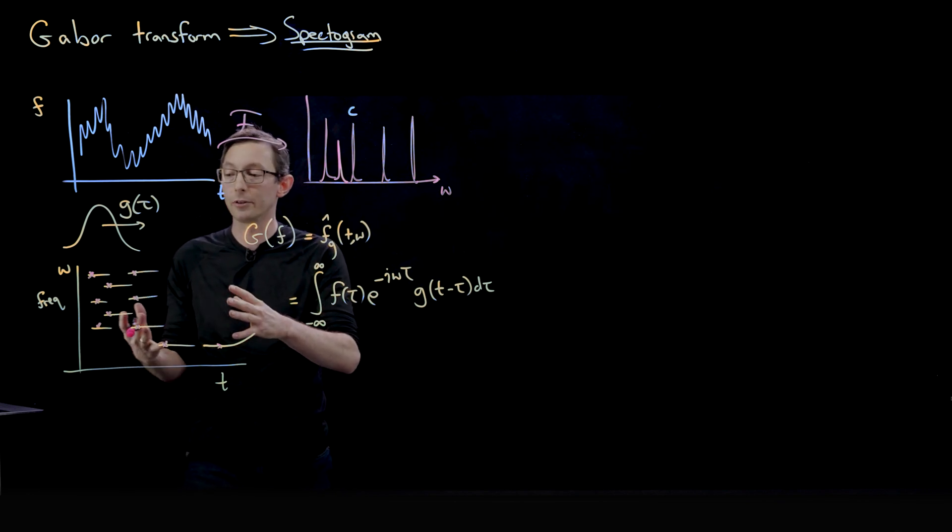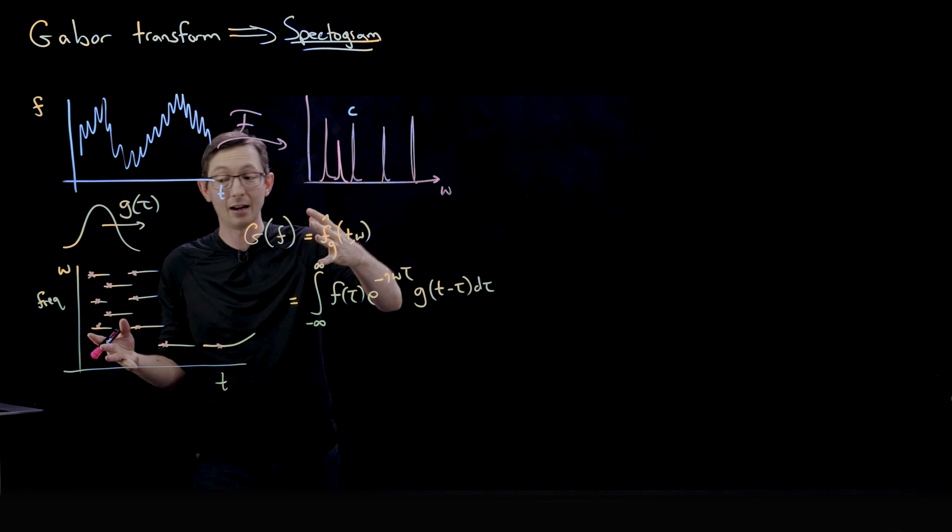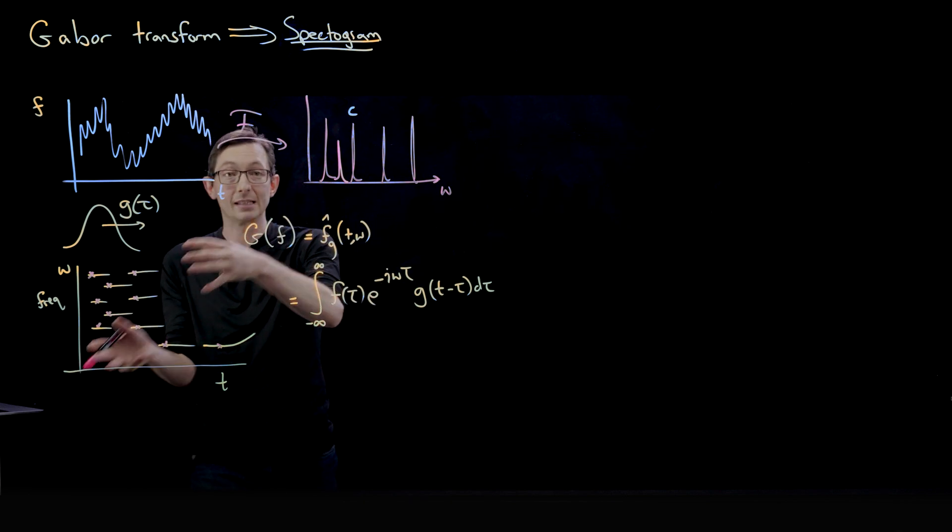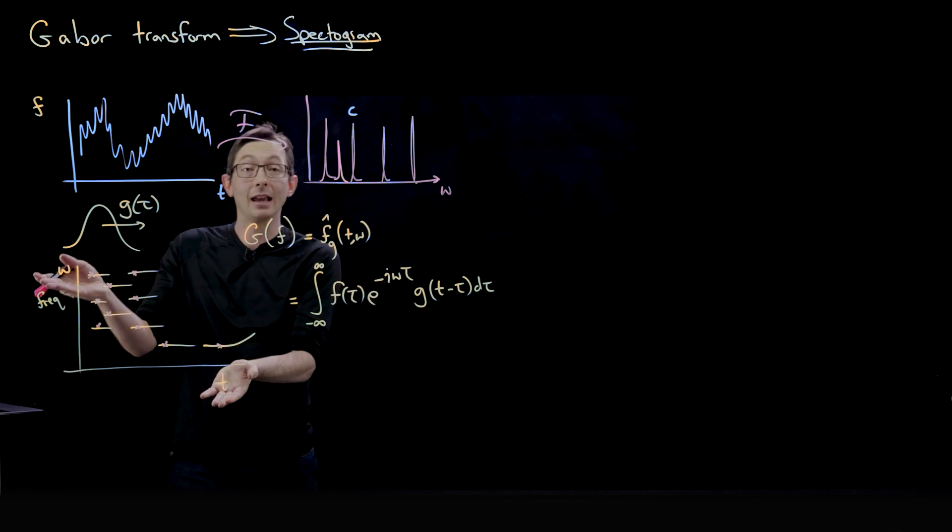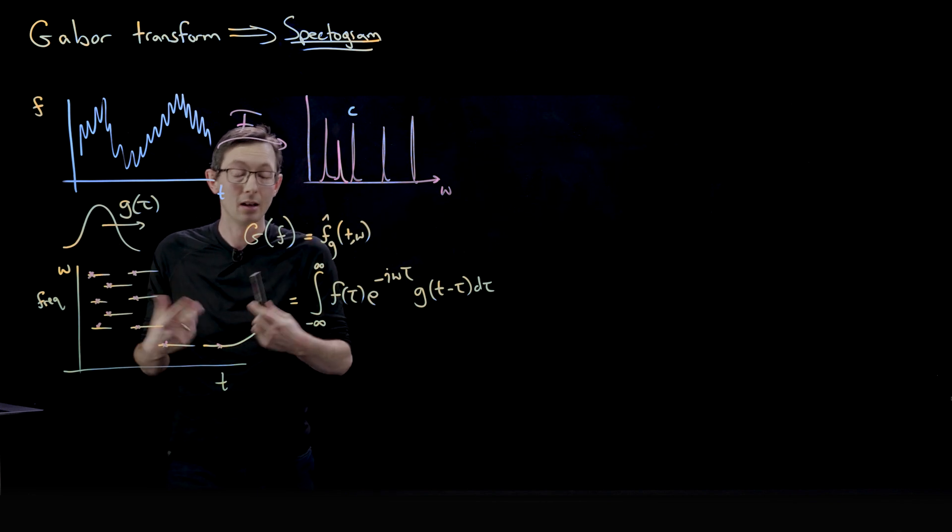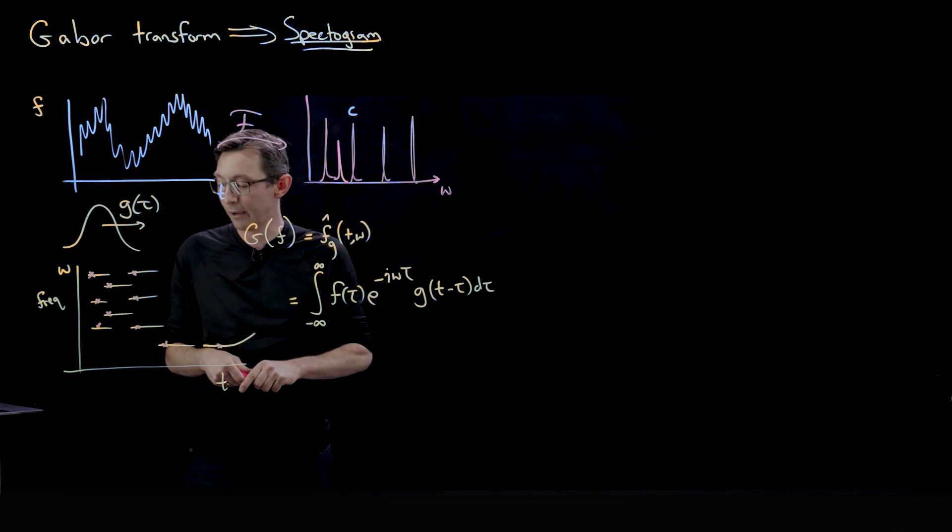And so that makes it a little bit harder for the Shazam algorithm to match these peaks and they have to do something a little bit more clever, figuring out if I slowed my song down or sped it up, how would this spectrogram scale in time and frequency. So that's kind of an interesting problem that the Shazam algorithm uses.